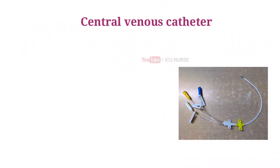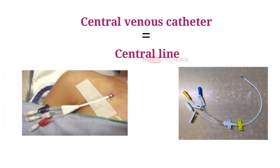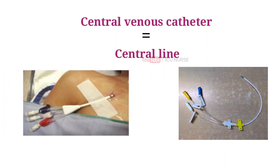A central venous catheter, also known as a central line, is a tube that doctors place in a large vein in the neck, chest, groin, or arm to give fluids, blood, or medications, or to do medical tests quickly.